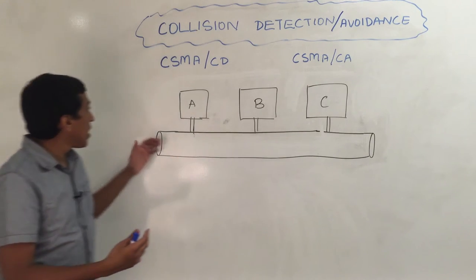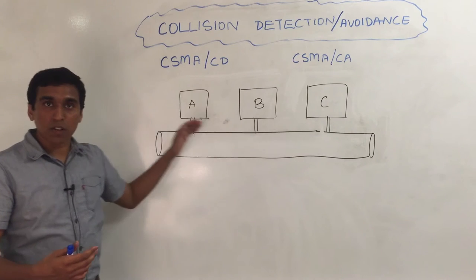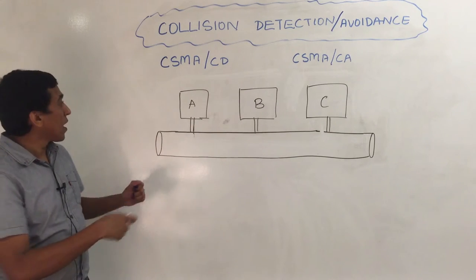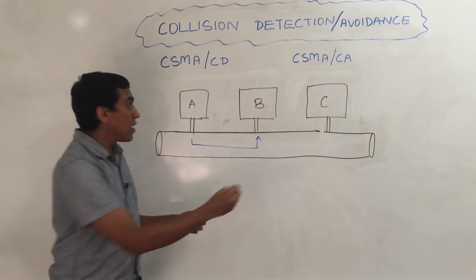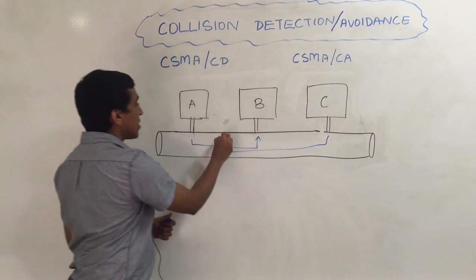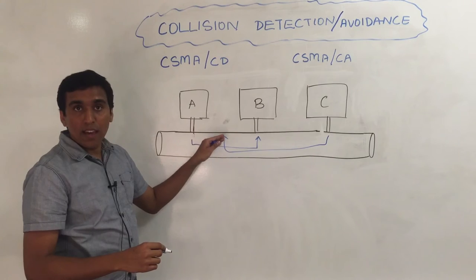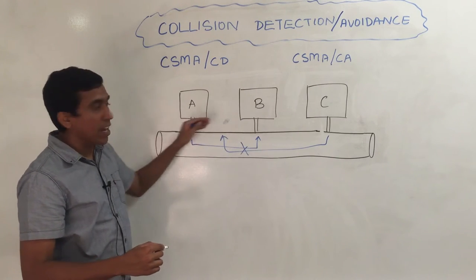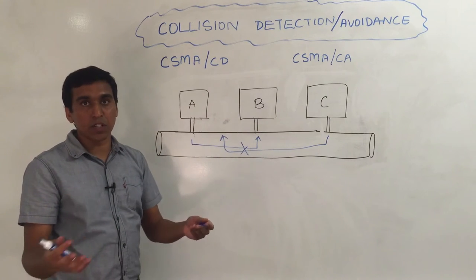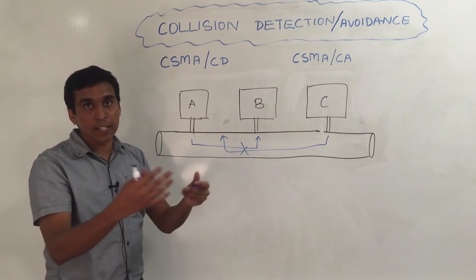In the same way, let's say we have three different computers on the same network. If A was talking to B and C suddenly transmits data to A, there is a collision. When this collision happens, the original message from A to B becomes garbage. It's of no use anymore because there is interference.